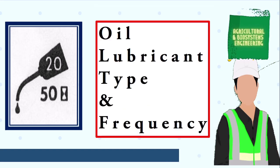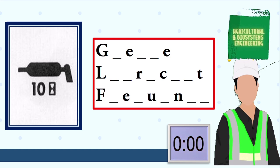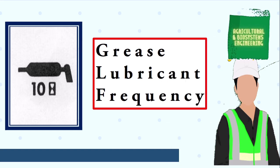The answer is oil lubricant type and frequency. Next symbol, your 10 seconds starts now. The answer is grease lubricant frequency. Next symbol, your 10 seconds starts now.